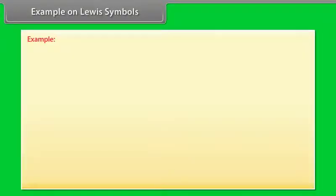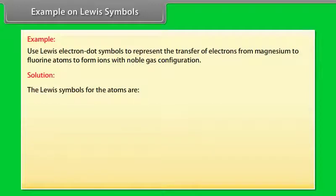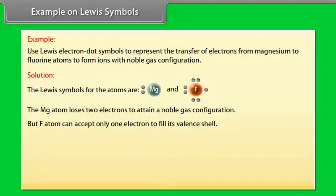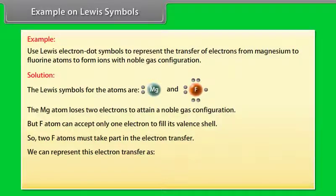Example on Lewis symbols. Use Lewis electron dot symbols to represent the transfer of electrons from magnesium to fluorine atoms to form ions with noble gas configuration. The Mg atom loses 2 electrons to attain a noble gas configuration. But each F atom can accept only 1 electron to fill its valency shell. So 2 F atoms must take part in the electron transfer. We can represent this electron transfer as shown.